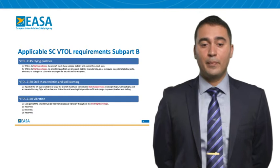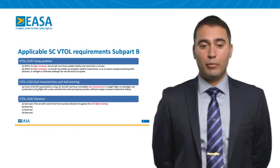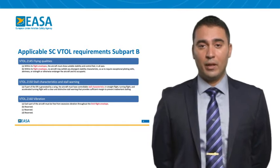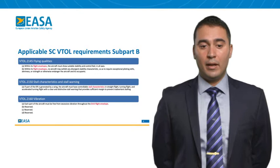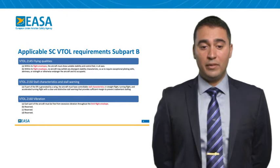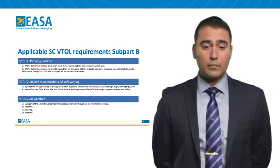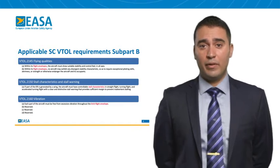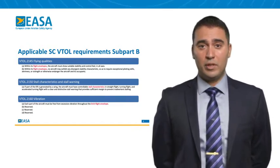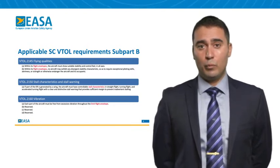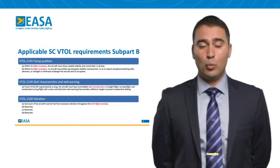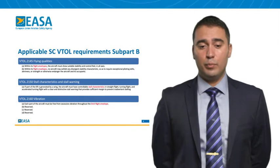Still in subpart Bravo: requirement 2145, flying qualities, refers to flight envelopes in general, in both Alpha and Bravo. Requirement 2150 covers stall characteristics and stall warning — this is the first time stall is referred to in the special condition VTOL, and we will see how it differs from CS23 in later slides. Requirement 2160, vibration, states that the aircraft must be free from excessive vibration throughout the limit flight envelope.